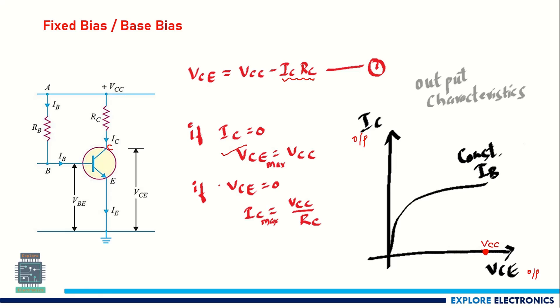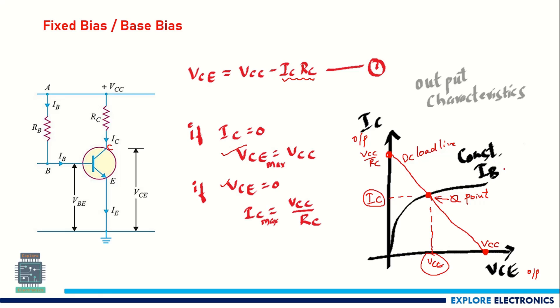When VCE equals zero, the maximum current IC is VCC divided by RC. Joining these two points gives the DC load line. Where this load line intersects the output characteristics is called the Q point, or DC operating point. From this point we read the DC values of IC and VCE. We keep these constant — and since IB is constant from biasing, a fixed IB curve is selected — this intersection defines the transistor's operating point.